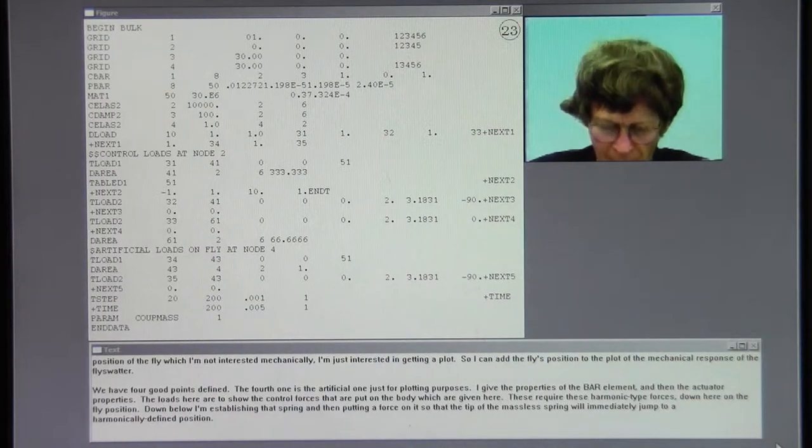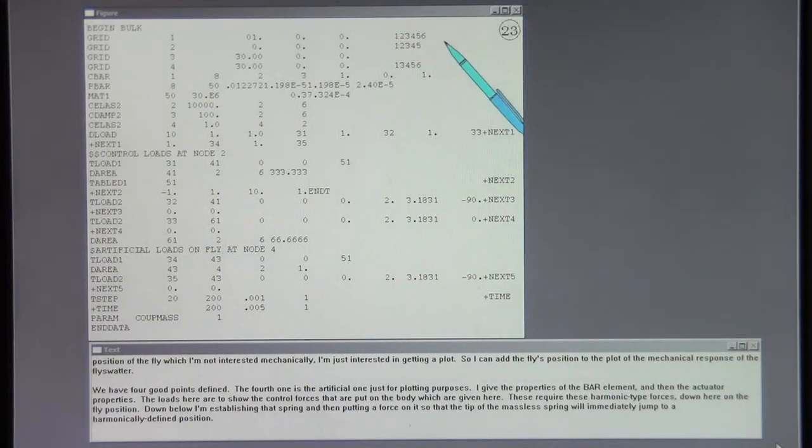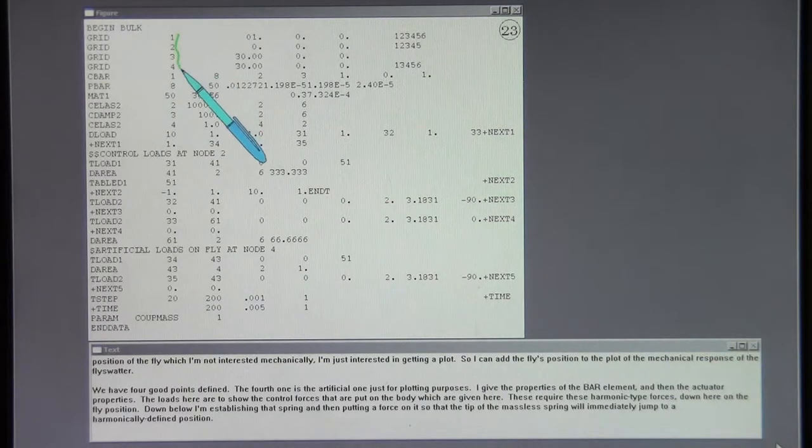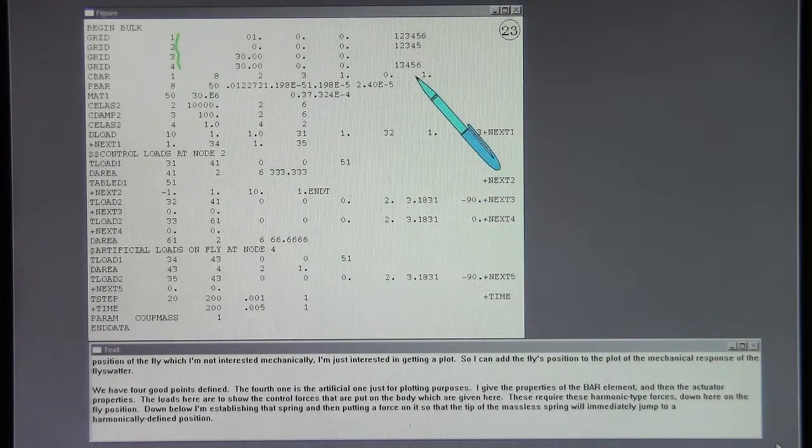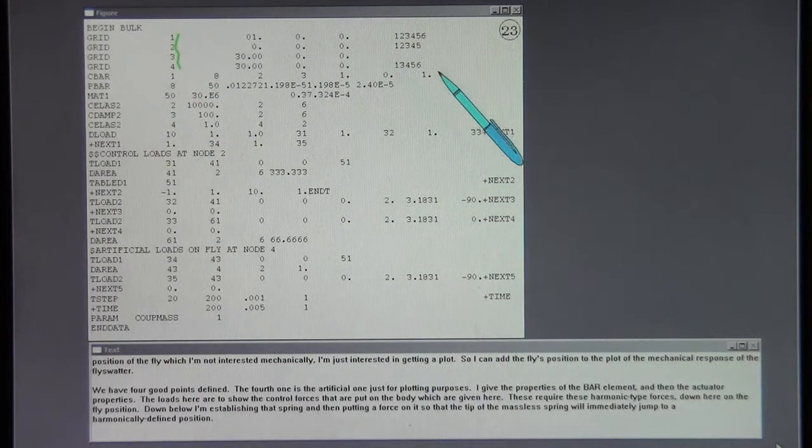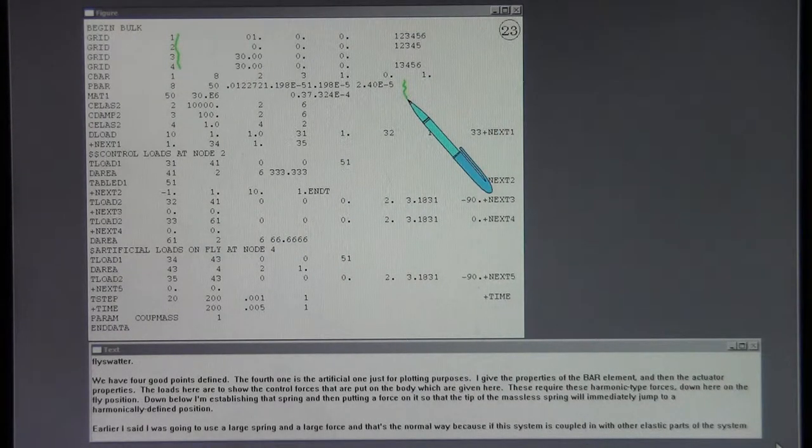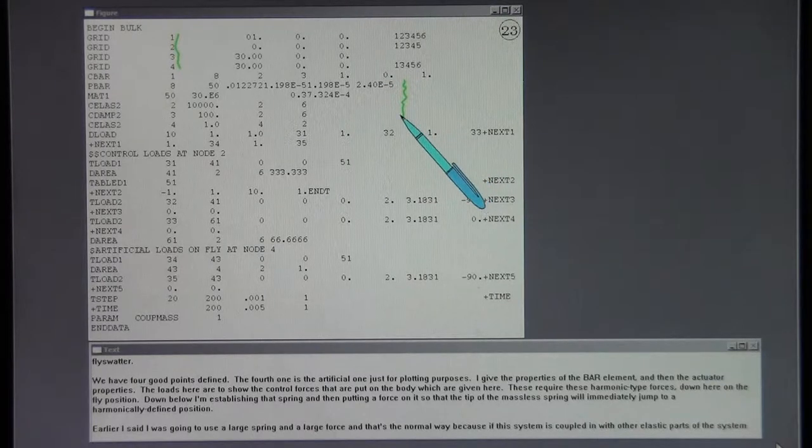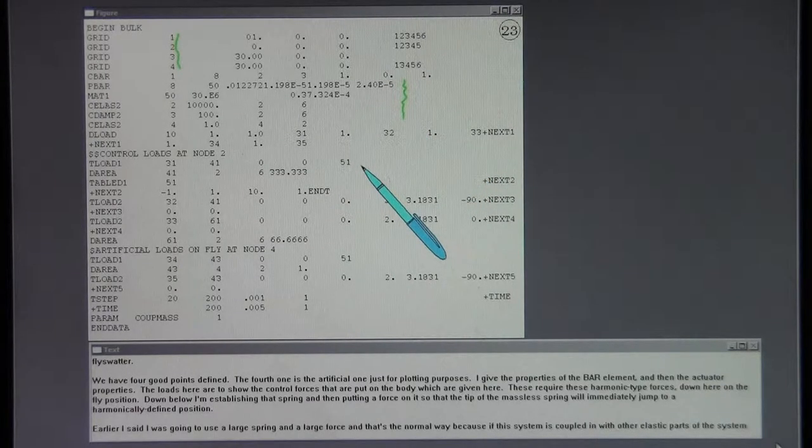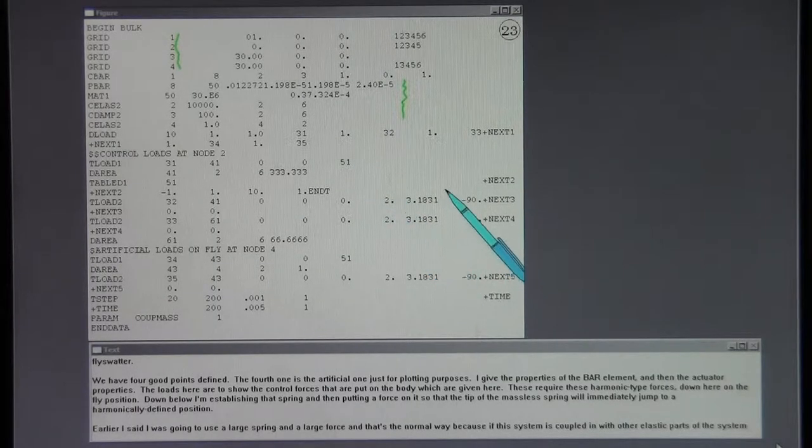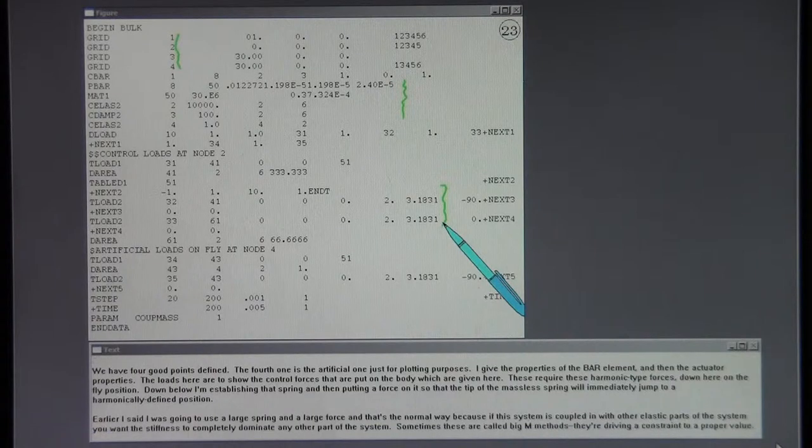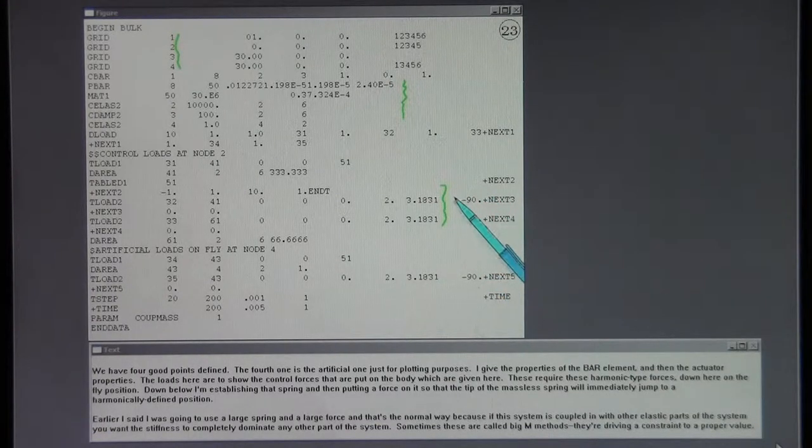We have four grid points defined for the fly swatter. The fourth one is artificial, just for plotting purposes. I give the properties of the bar element and then the actuator properties. The loads here show the control forces that are put on the body, which are given here. These require harmonic type forces.